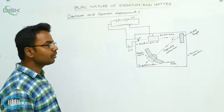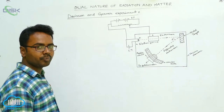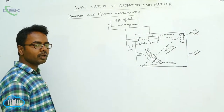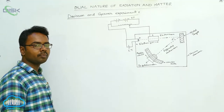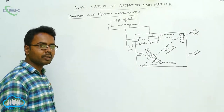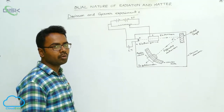Here we discuss about the Davisson and Germer experiment. The scientists Davisson and Germer, collectively, for the first time proved the wave nature of the electron.